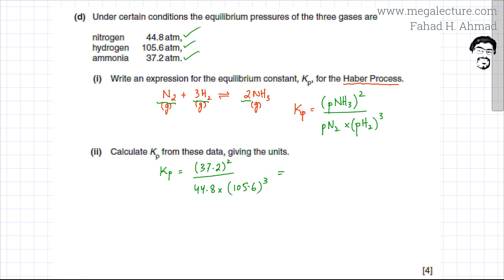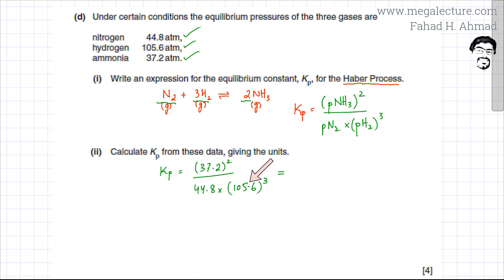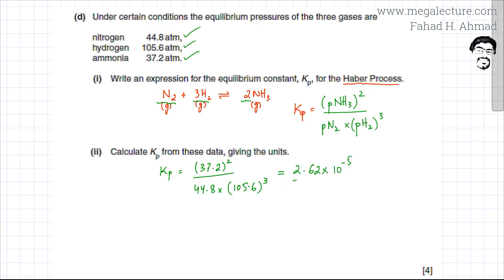Be very careful with your calculations — many people don't use the calculator properly. Solve the numerator and denominator separately and always recheck. The answer from this expression is 2.62 × 10⁻⁵. Remember to get the significant figures right.